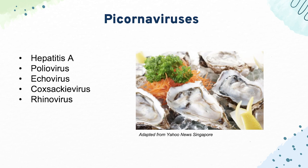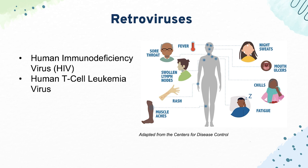For our retroviruses, starting off with HIV or human immunodeficiency virus. Know the virus structure and the structural genes that go into it, and all the common diseases that manifest in HIV based on CD4 count. There's a great chart in First Aid for that. Then we have human T-cell leukemia virus, known for causing lytic bone lesions and hypercalcemia — if you see that, think HTLV.